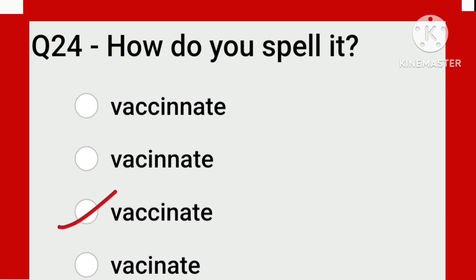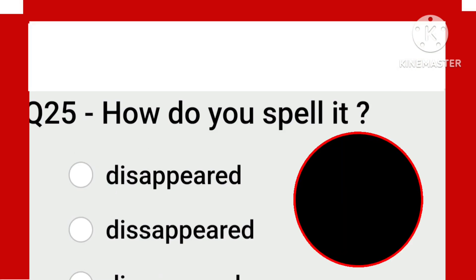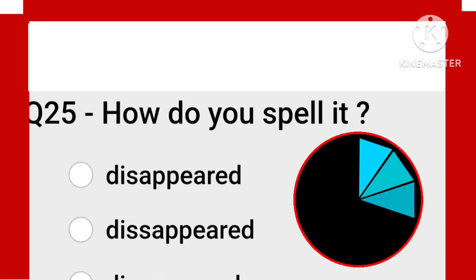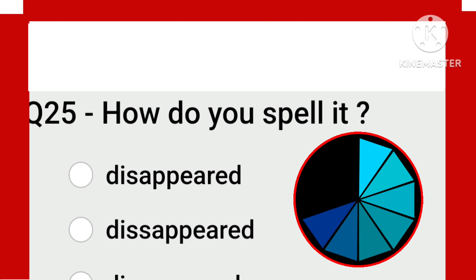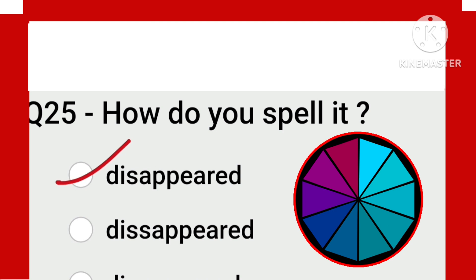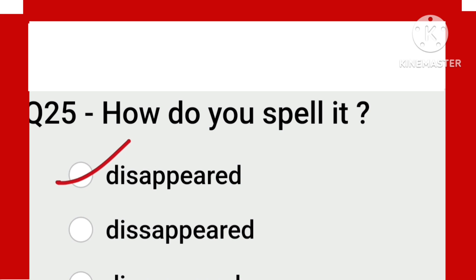Next word is 'disappeared.' The base word is 'appear' — from that you have to make 'disappeared.' So before 'appeared' you add 'dis.' This is the correct spelling: D-I-S-A-P-P-E-A-R-E-D.